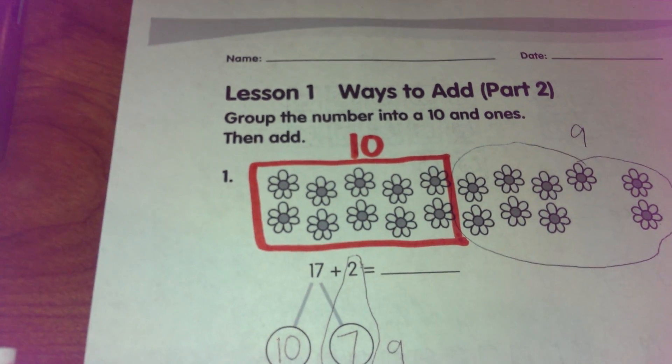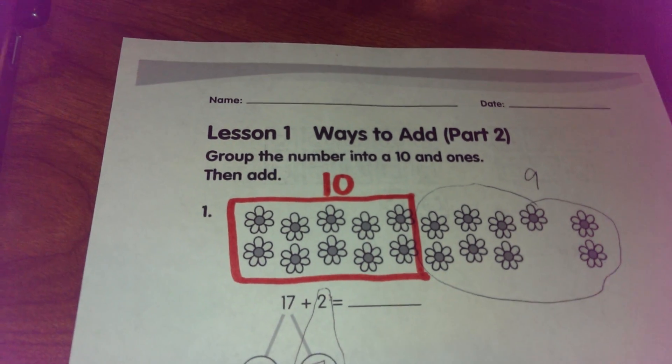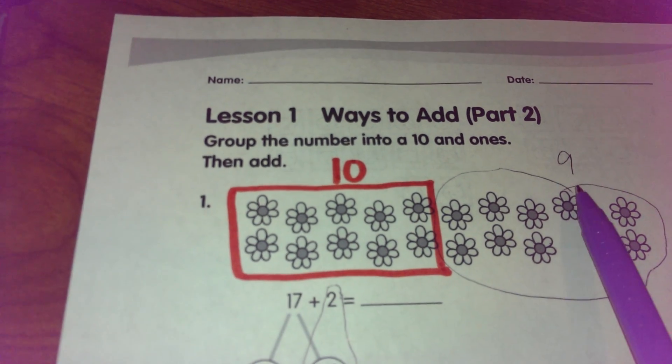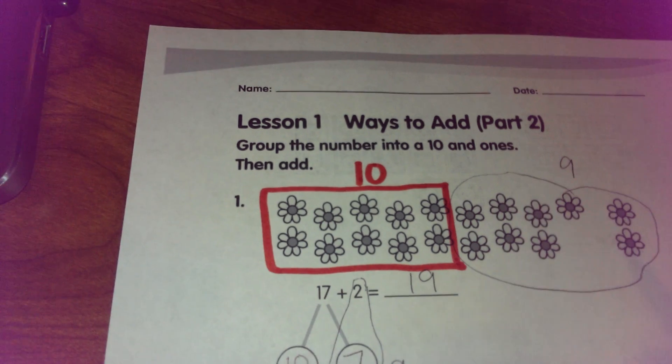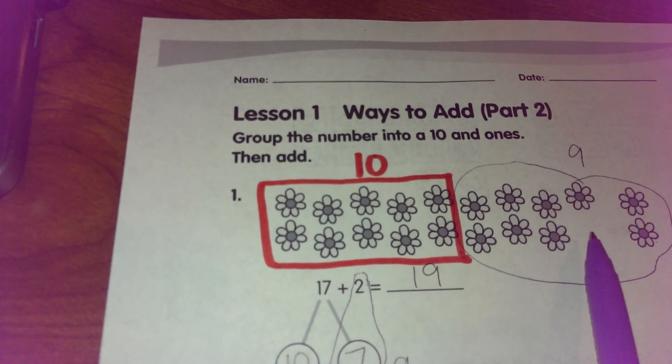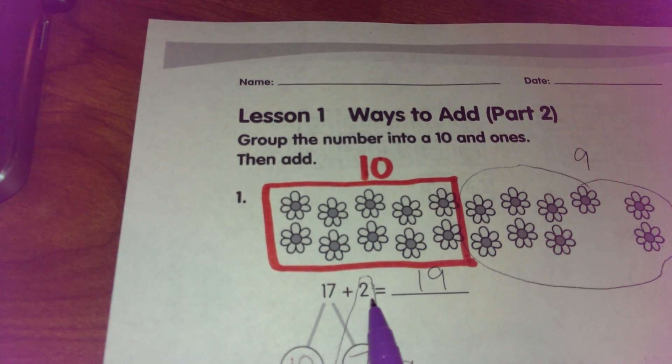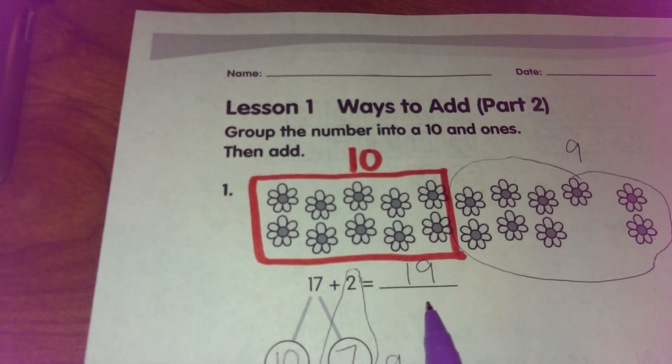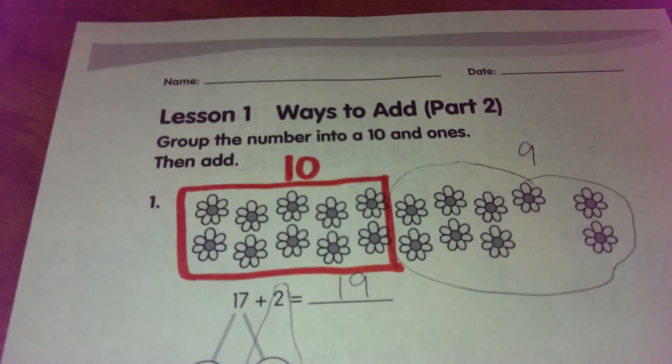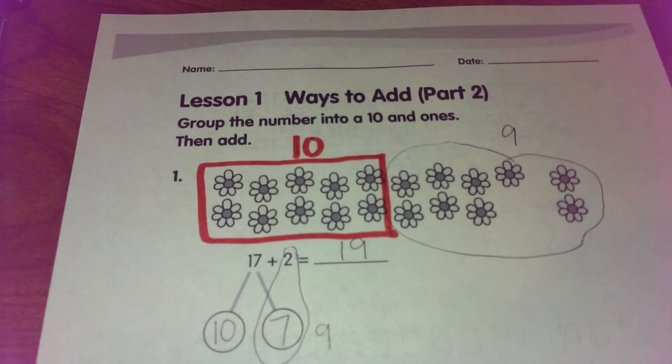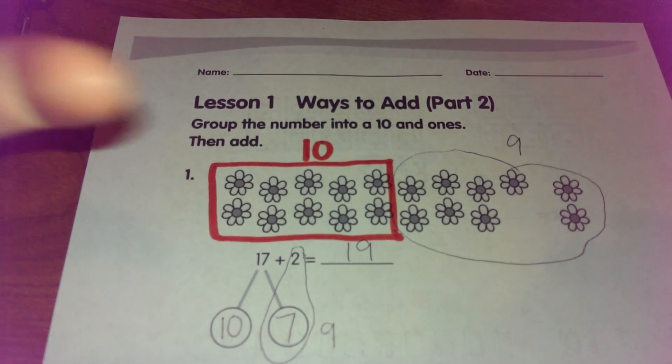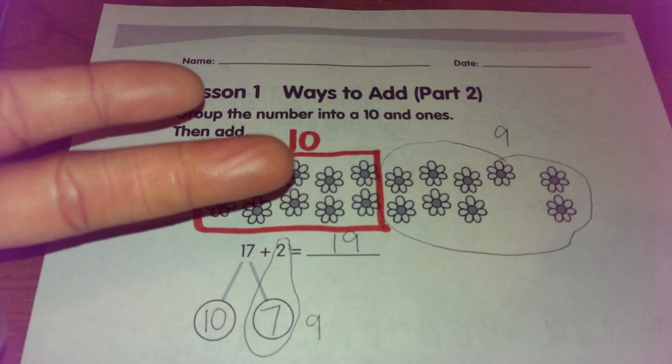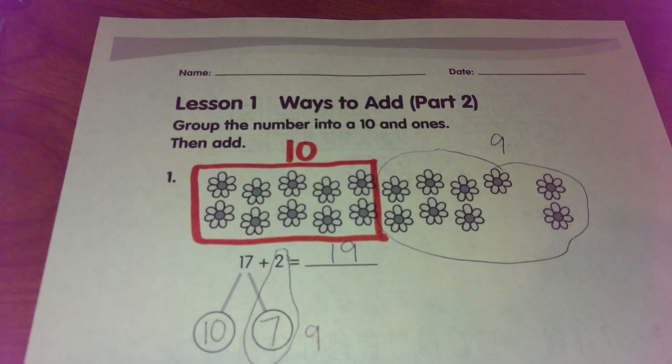Since ten is so easy to count with, I know that ten and nine is nineteen without even counting on. So I'm going to go ahead and put in my nineteen. So if ten and nine is nineteen, then seventeen plus two is equal to nineteen. I can prove that by using an old strategy of counting on. Seventeen, eighteen, nineteen. Was I correct? Yes.